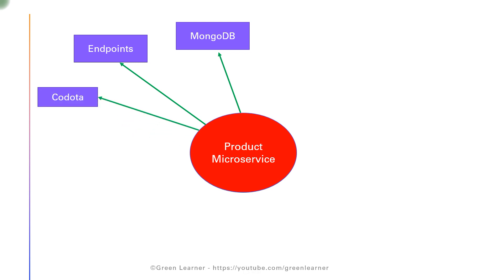The next step was about coding improvement and efficiency. We introduced the Kodota plugin in our IDE, which helped us to autocomplete some of the code. Then we did Lombok, which is yet another code improvement to enhance readability and code refactoring. We saved ourselves from writing boilerplate code in Java files, and by using Lombok it was able to generate those codes automatically, making our Java files more readable.